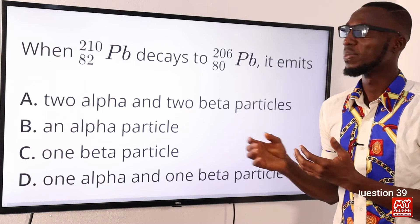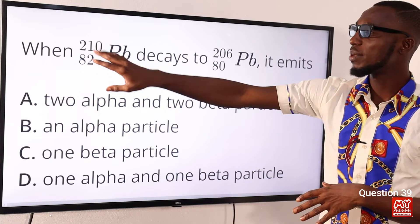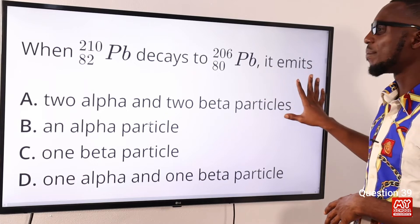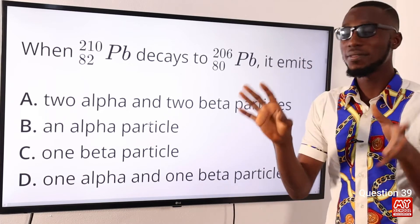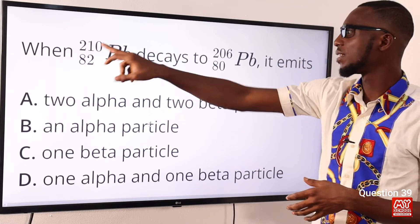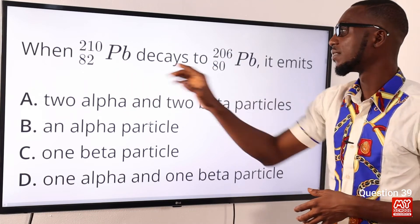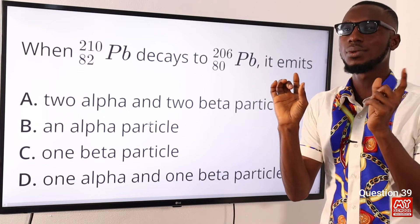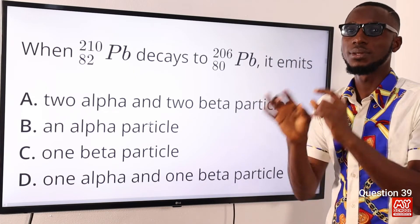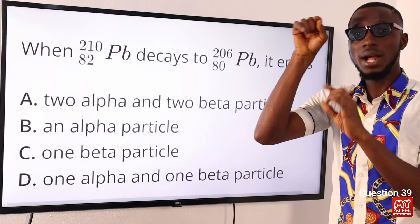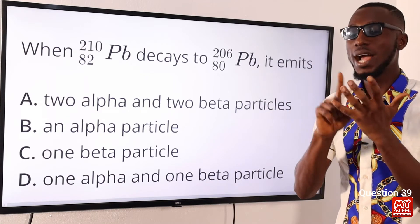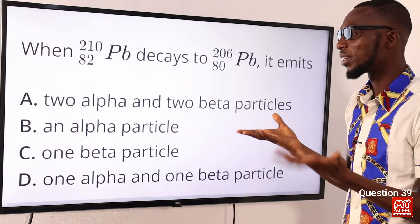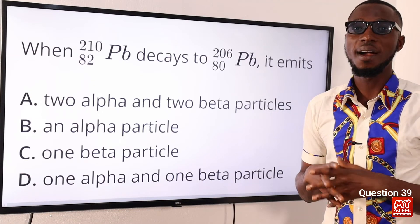Join me as we solve question 39. When lead with atomic mass and atomic number decays to this, it emits what? When you take note of this, observe this variable, we have a difference of 4 and we have a difference of 2. So, that is 4 and 2. That tells you what? An alpha particle. We're talking about helium, to be precise. 4 atomic mass, atomic number 2, helium. The correct option is option B, an alpha particle.